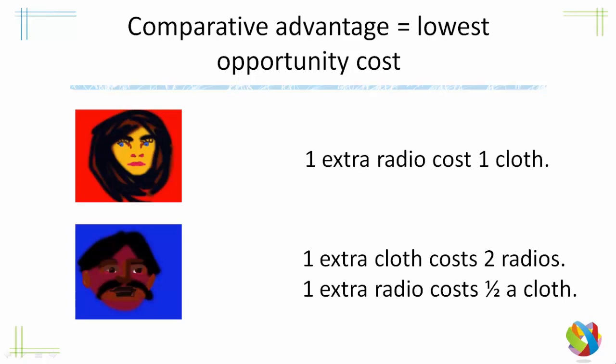What would happen if Mary wanted to produce one extra radio? Well, it takes her the same amount of resources to produce radios as cloths, so one extra radio means she would have to stop producing one cloth. For Peter on the other hand, he's much better at producing radios — twice as good actually — than producing cloths. So one extra cloth would cost him two radios, and conversely one extra radio would only cost him half a cloth.